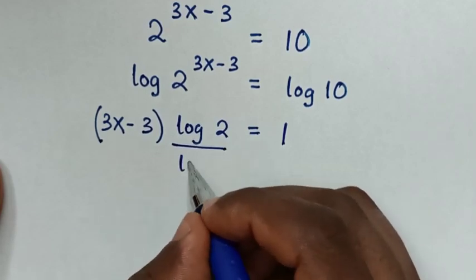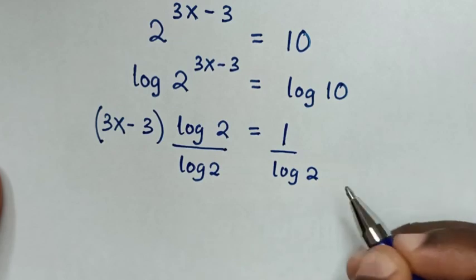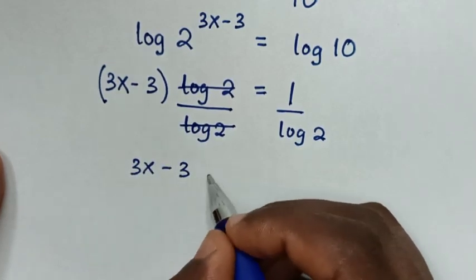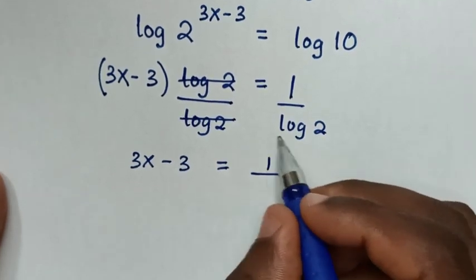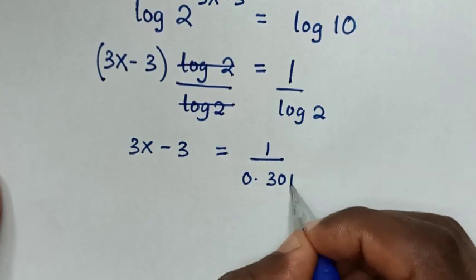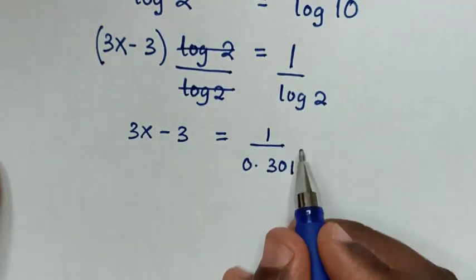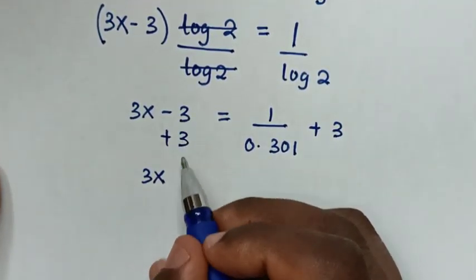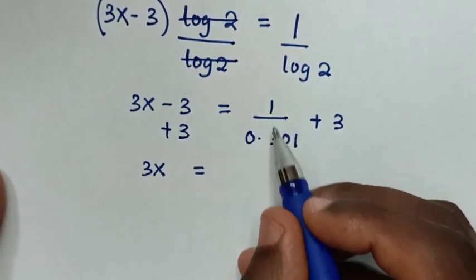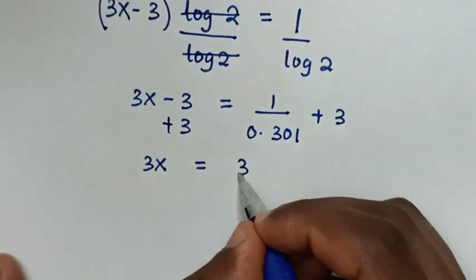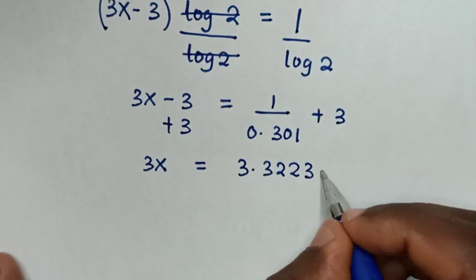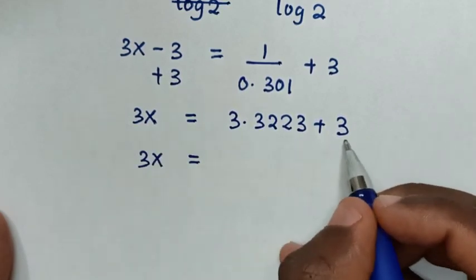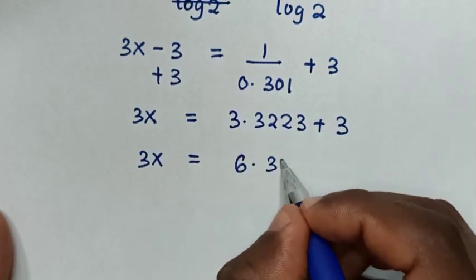In the next step we divide by log of 2 on both sides, so these will cancel. Then 3x minus 3 is equal to 1 over log of 2, which is 0.301, giving approximately 3.3223. Then we take the negative 3 to the right side by adding 3 to both sides, so 3x equals 3.3223 plus 3.